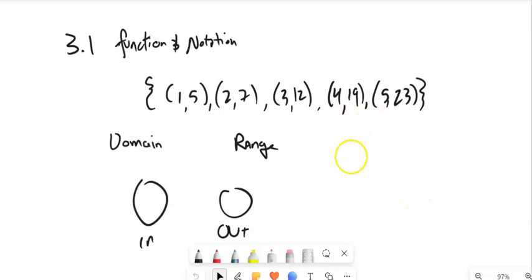This is Math 99. We're going to take a look at section 3.1. And in this section, we are looking at functions and notations for functions. So this right here, this is a collection of points.